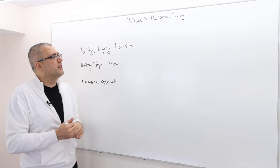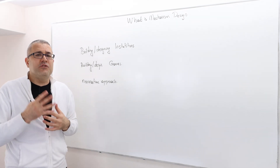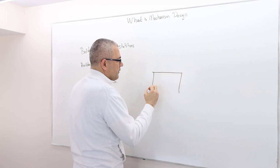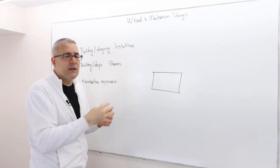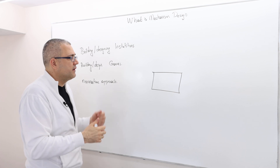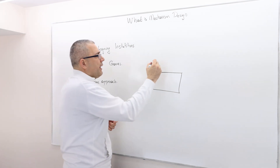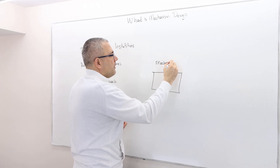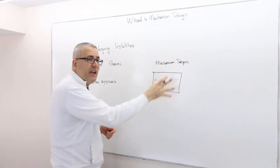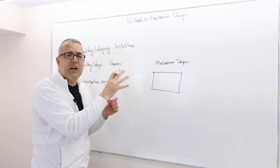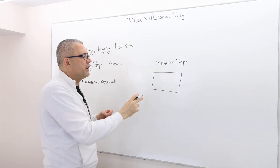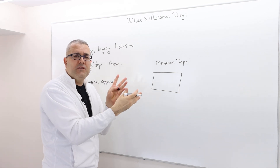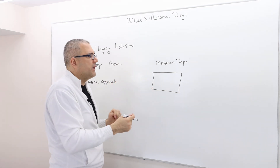I said mechanism design is the engineering side of economics, and I like thinking about it with a diagram. Mechanism design is a kind of machinery — the participants play a game inside this machinery. We set the rules, set the strategies, and then let them play the game.